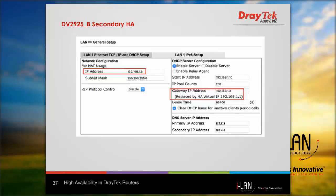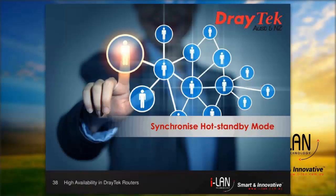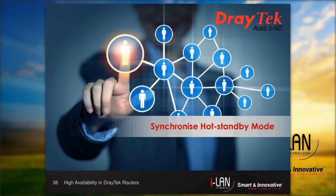Repeat these settings on the secondary router, where the LAN IP address should be different and larger than that used on the primary router. Once high availability is set up on both routers and both are linked, we need to configure other functions on the primary router so we can see configuration synchronization take place. Your primary router is now ready — please proceed to the next step.